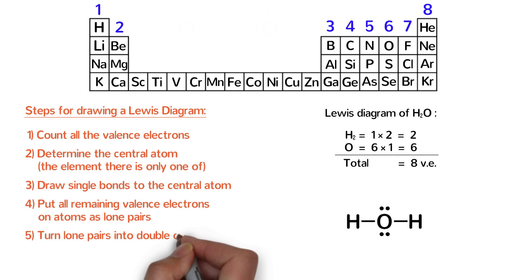Step 5. Turn lone pairs into double or triple bonds to give every atom an octet or duet for hydrogen. Pause the video and see if all the atoms in our H2O are happy. Because each hydrogen has two electrons and the oxygen has eight electrons, everyone is happy, and there is no need for double or triple bonds, which means that our Lewis diagram of water is now complete.